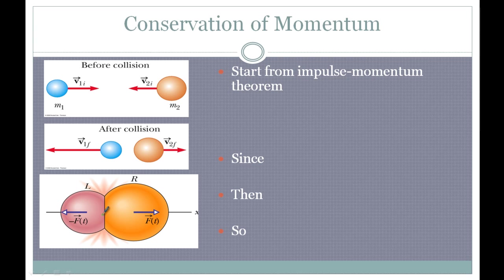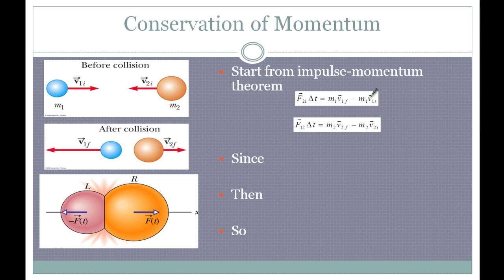So how do we get the equations for conservation of momentum? We start with the impulse-momentum theorem: force times delta t equals momentum after minus momentum before. That was the force of the second object on the first one; this equation is the force of the first one on the second one. Now Newton's third law tells us this force and this force are equal but opposite.